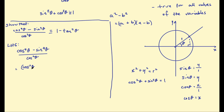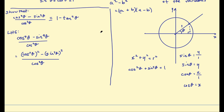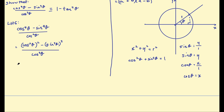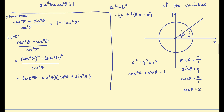This is still all over cosine squared theta. Now I have something squared minus something else squared, and I can write that as the difference of two squares. So this becomes: cosine squared theta minus sine squared theta, multiplied by cosine squared theta plus sine squared theta, all divided by cosine squared theta. It does get confusing when you've got extra exponents, but I'm essentially using that difference of two squares identity.